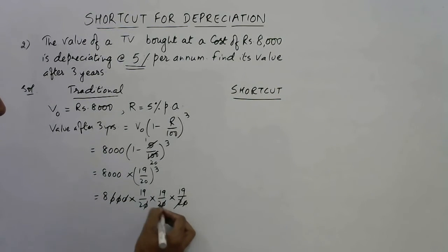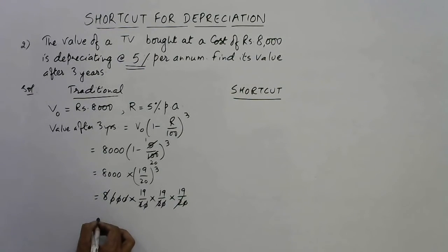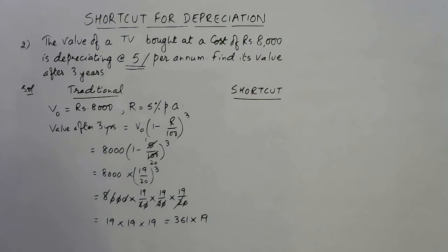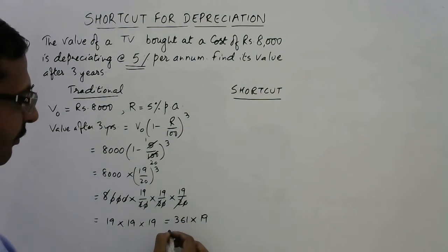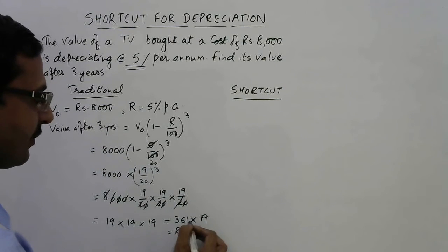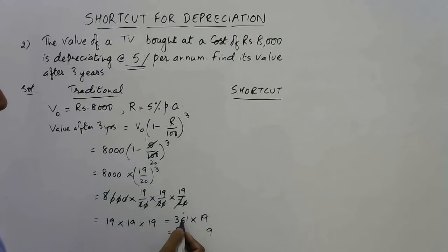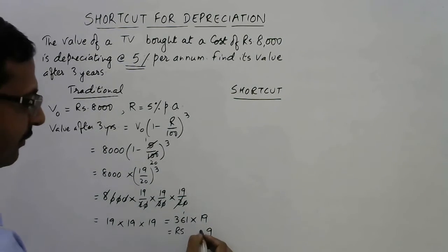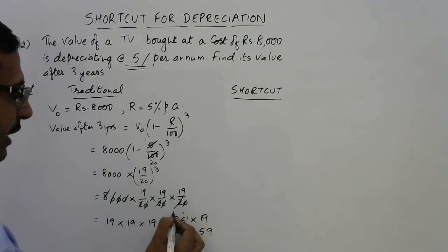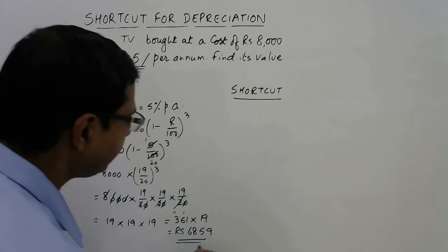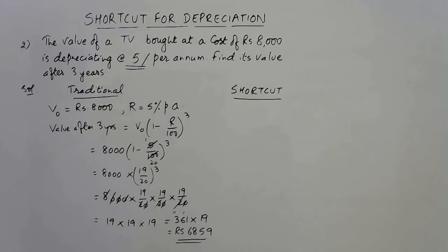Three zeros cancel out and 2 into 2 into 2 is 8, so 8 also cancels out, leaving 19 into 19 into 19 to be multiplied. The square of 19 is 361, and multiplying 361 by 19: 19 ones are 19, carry 1; 19 fives are 95, so 96; giving a final depreciated value after three years of rupees 6,859.